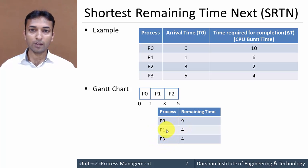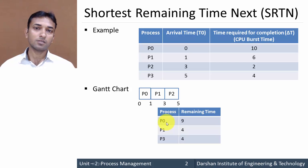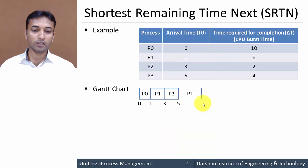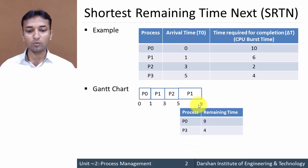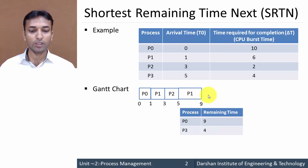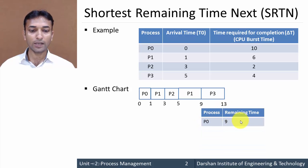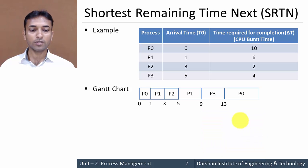Both P1 and P3 require the same time to complete execution. Whenever such a tie situation arises, First Come First Serve is applied — the process that arrived first gets the chance first. P1 arrived before P3, so the next turn is for process P1. It requires four milliseconds, so it runs from five to nine milliseconds. Then comparing P0 (nine milliseconds) and P3 (four milliseconds), next is P3, running from nine to thirteen milliseconds. Finally, only P0 remains and runs from thirteen to twenty-two milliseconds. All processes are now completed.